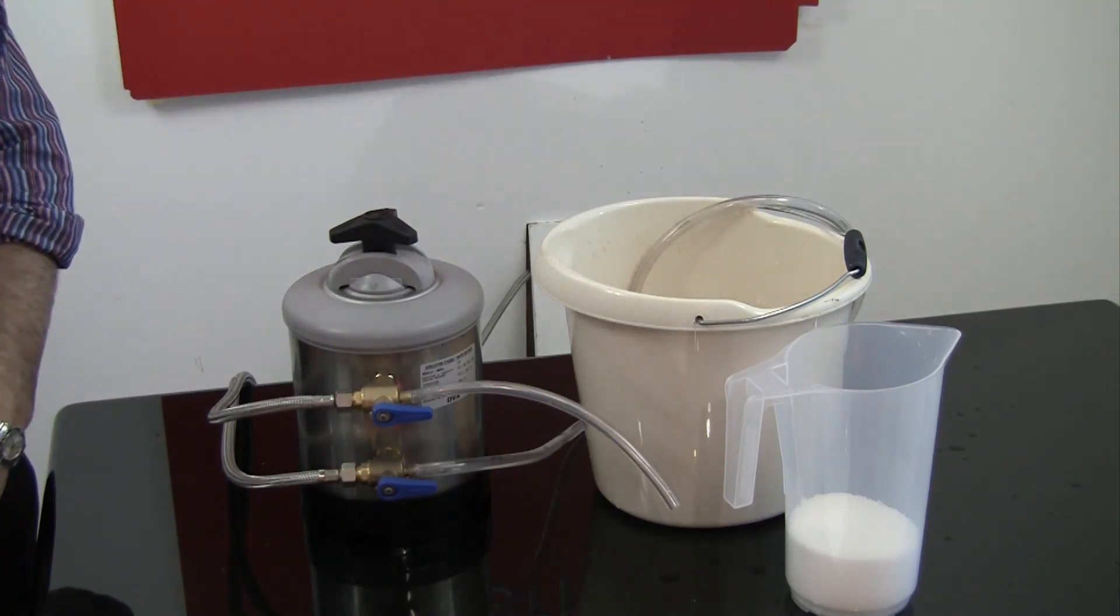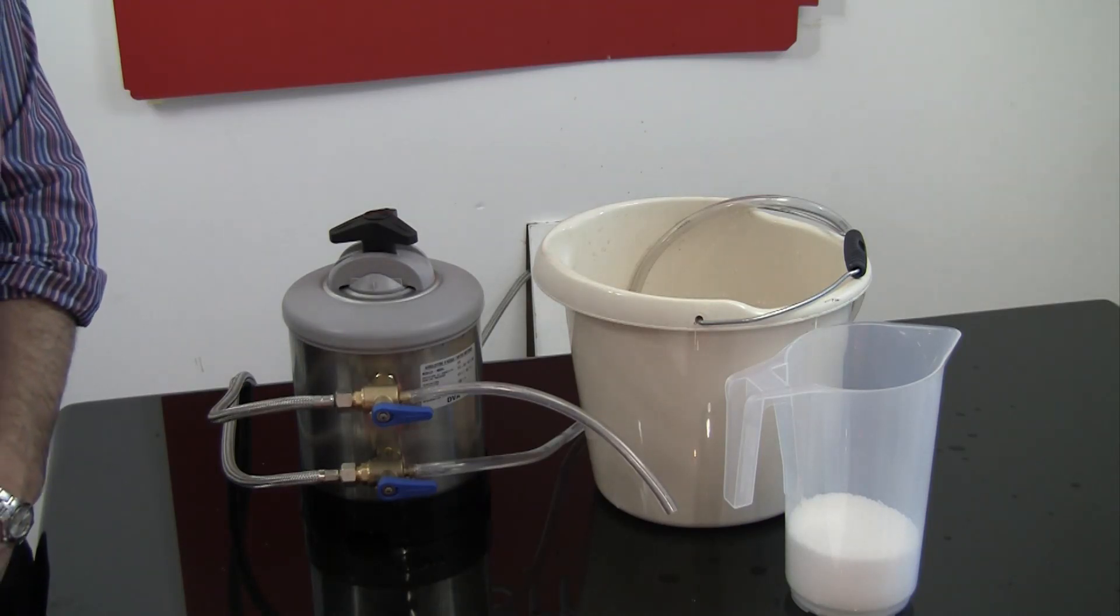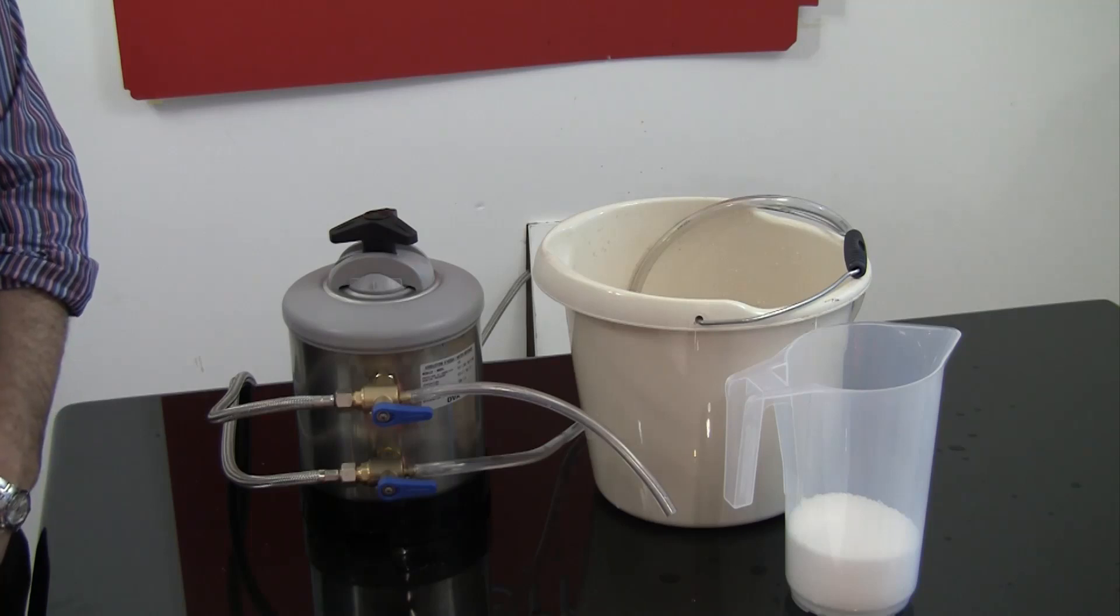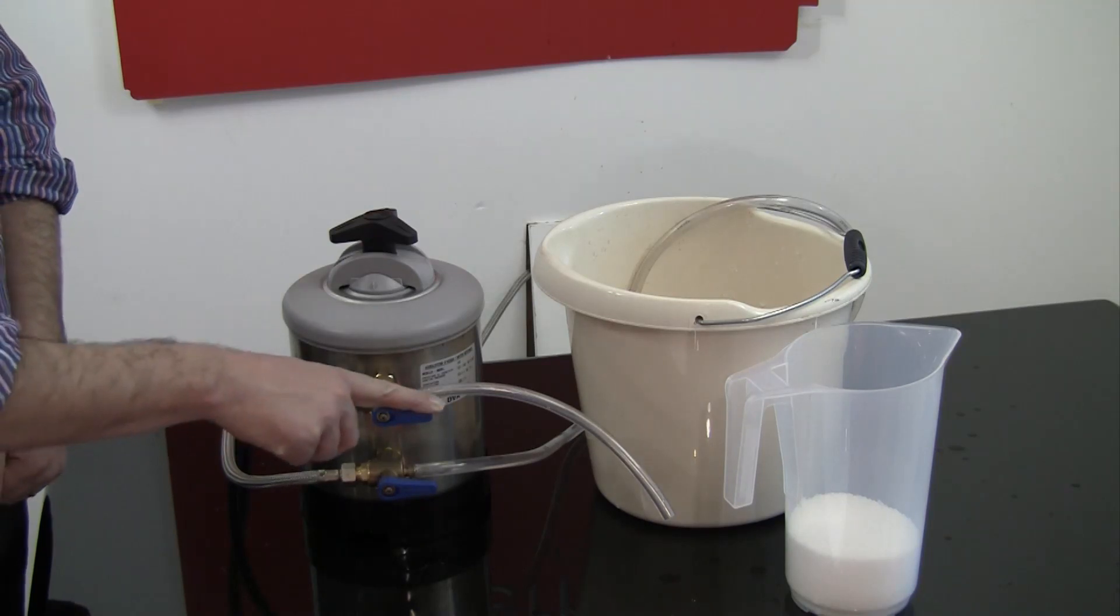Step five is to remove the lid and clamp at the top of the unit. If the unit is difficult to remove or won't come off, make sure that you have correctly depressurised the unit by ensuring the top tap is pointing towards the clear hose.